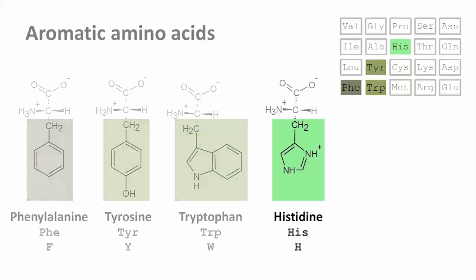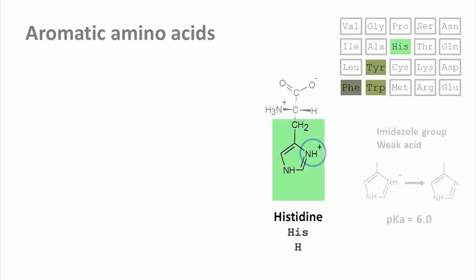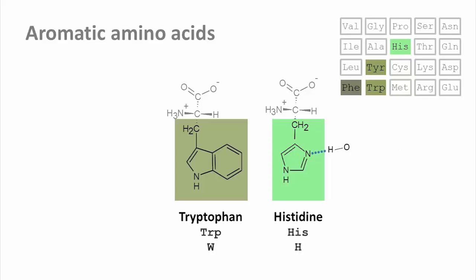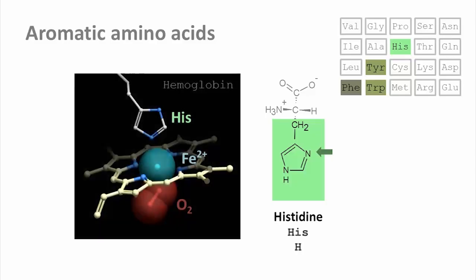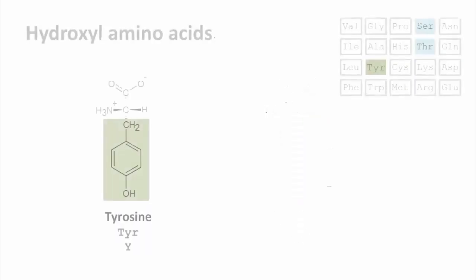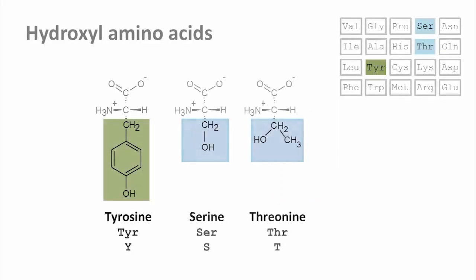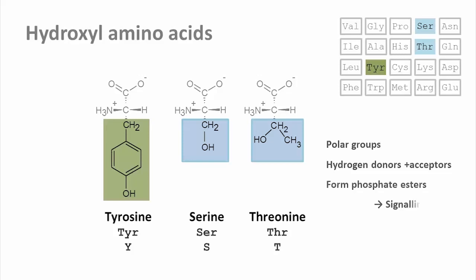Histidine is interesting because it is a weak acid. With a pK of 6.0, only a small proportion of exposed histidine residues will be protonated in the cytoplasm. Both histidine and tryptophan side chains can engage in hydrogen bonding. Another important role for histidine is in coordinating metal ions in proteins like hemoglobin. Tyrosine is a hydroxyl amino acid, as are serine and threonine. All three are polar, although serine and threonine are quite a bit more polar than tyrosine. All hydroxyl groups engage in hydrogen bonding as donor as well as acceptor. These hydroxyl groups can also form esters with phosphoric acid — we call this protein phosphorylation — and it has a fundamental role in signaling within cells.